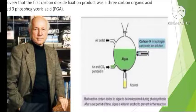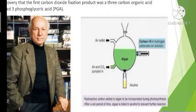He took Chlorella cells at different time intervals, dropped them in hot methanol, killed them, and then found out the radioactive substances in the algae. These were separated by two-dimensional paper chromatography, and the radioactive carbon was located by autoradiography. Thus, he found the first product was 3-phosphoglyceric acid.